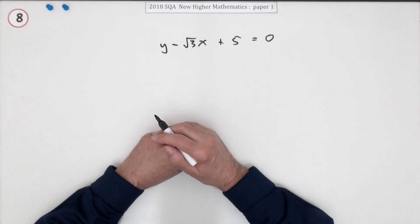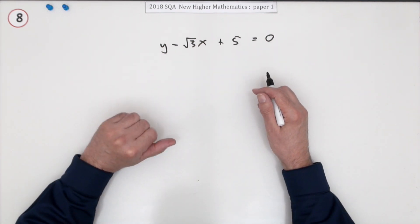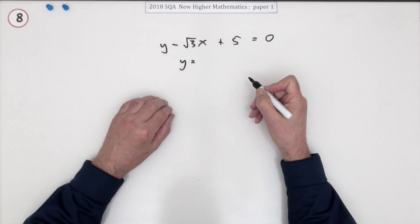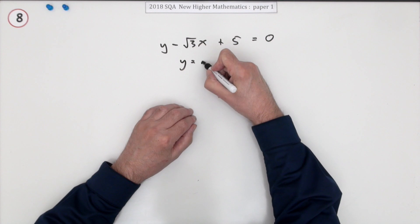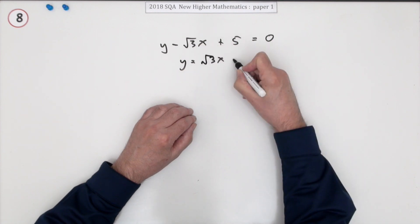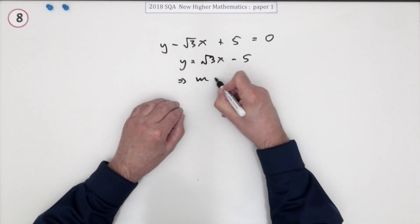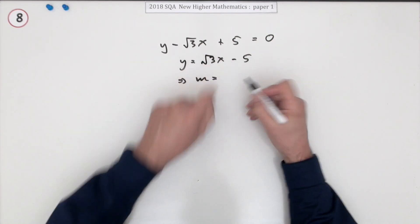Make sure it's in the form y equals first of all before you pick the gradient out of it. So I'll just rearrange it so y equals root 3 x minus 5. From that you can pick out that the gradient is the coefficient of x, which is root 3.